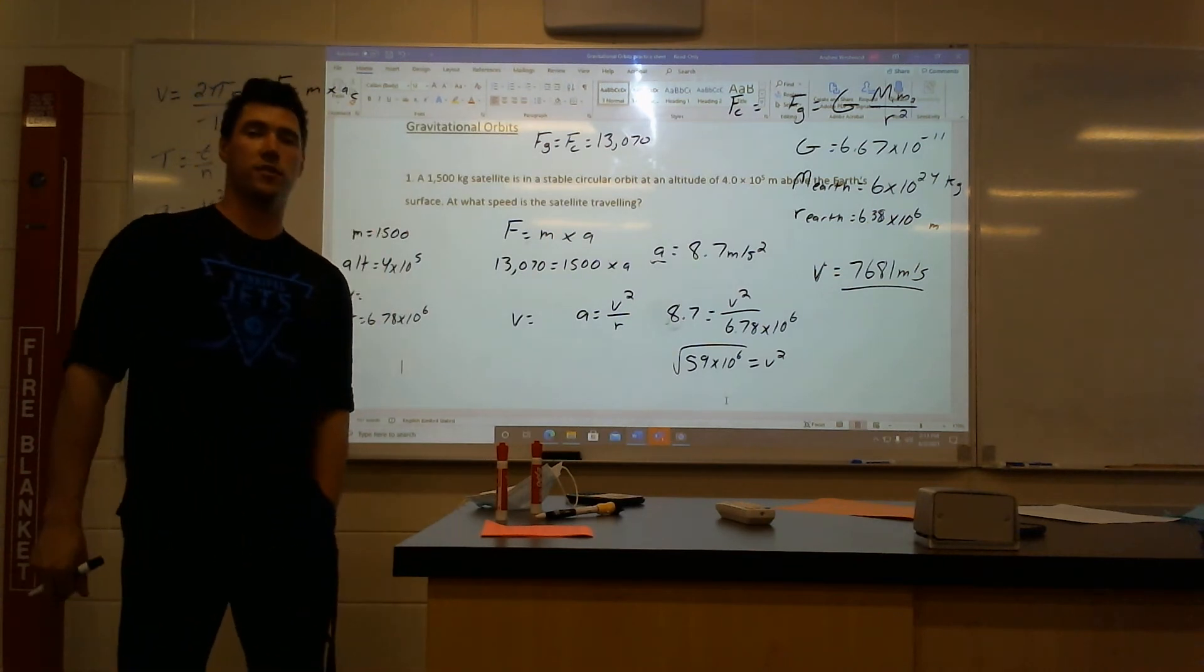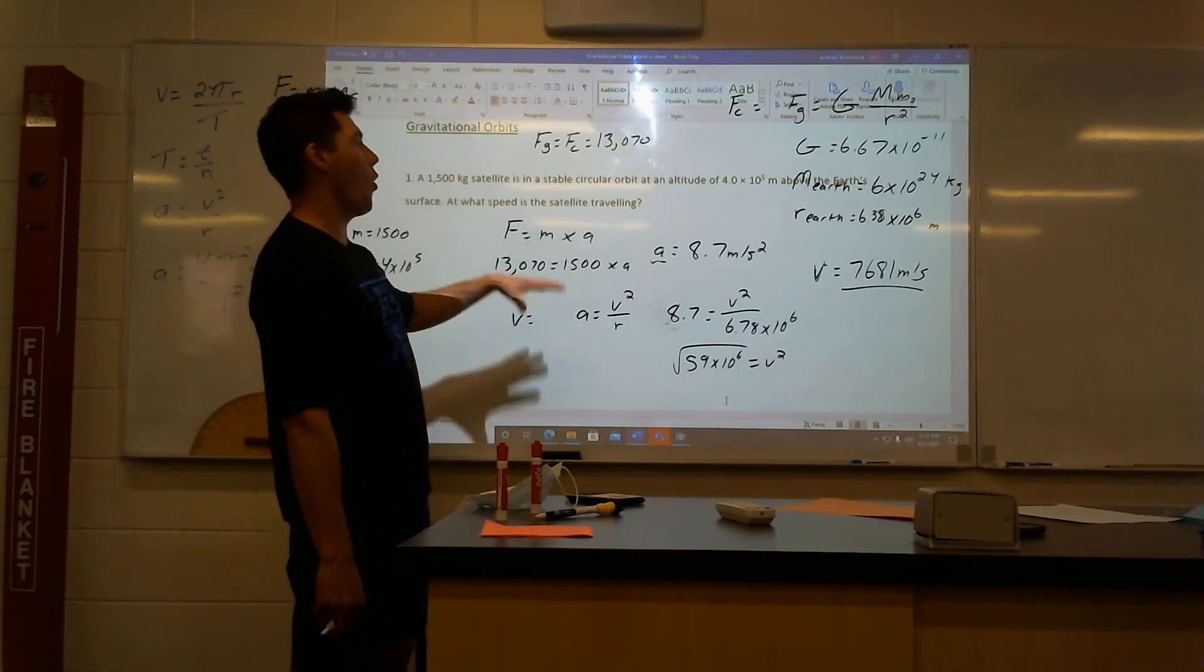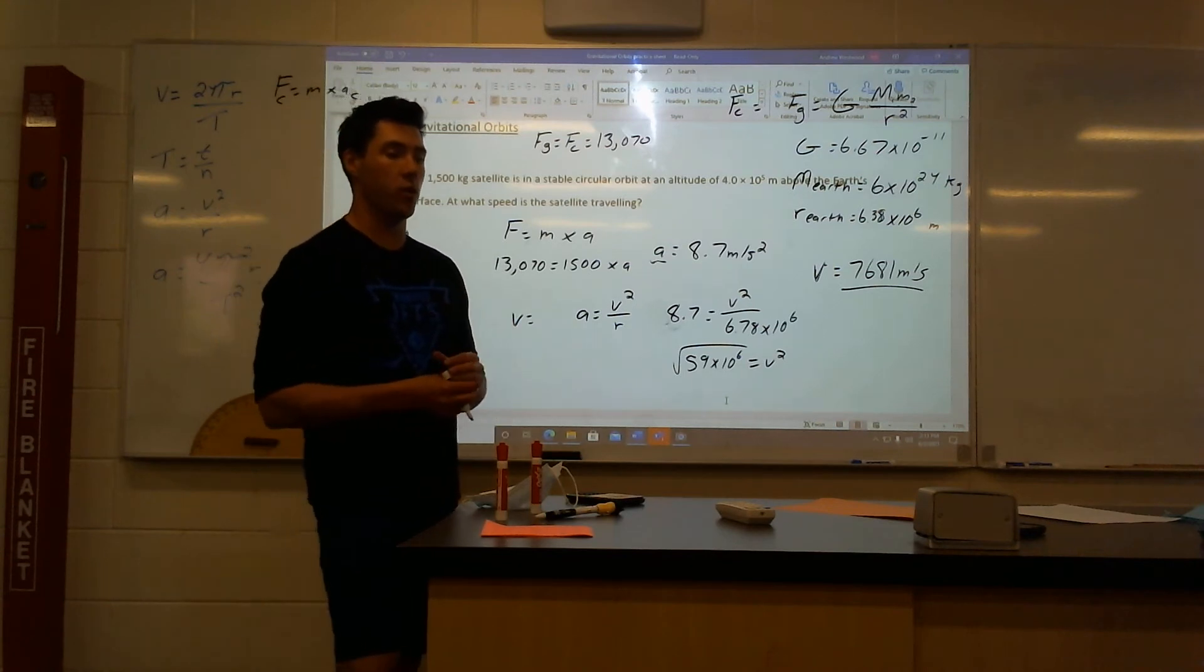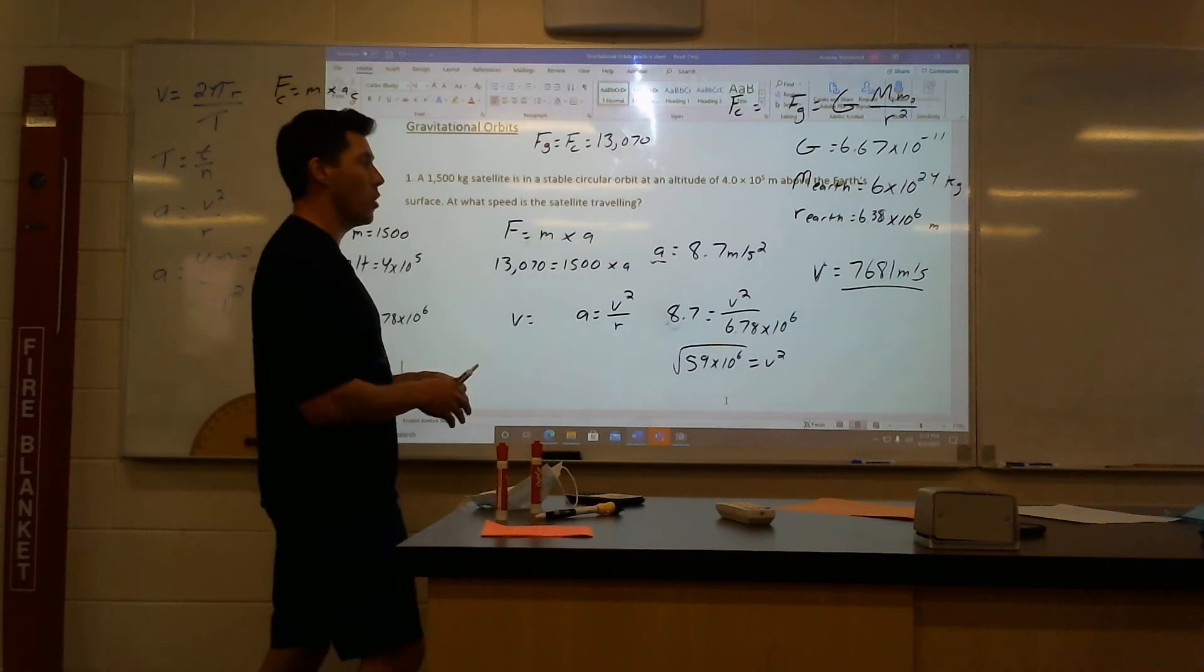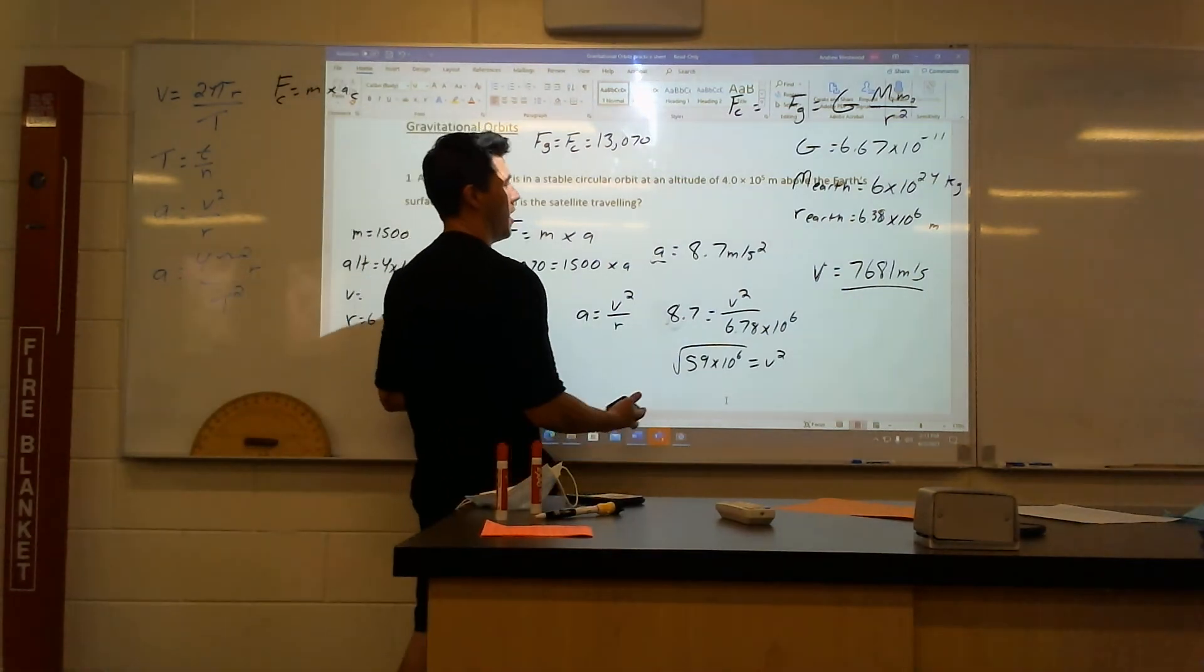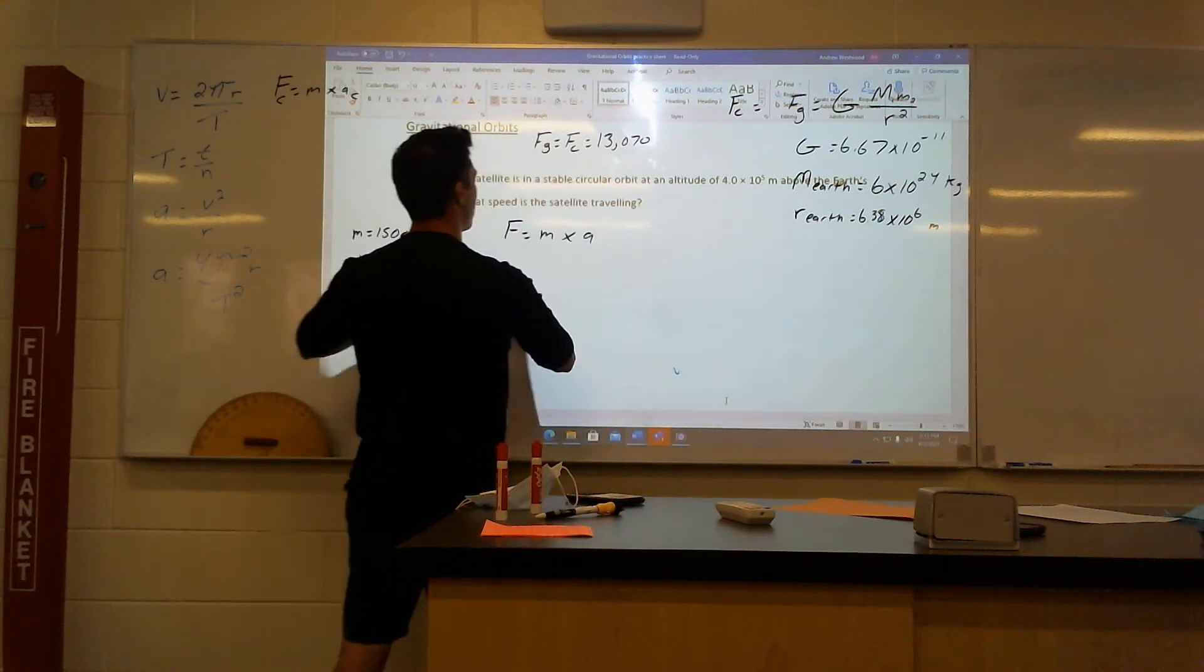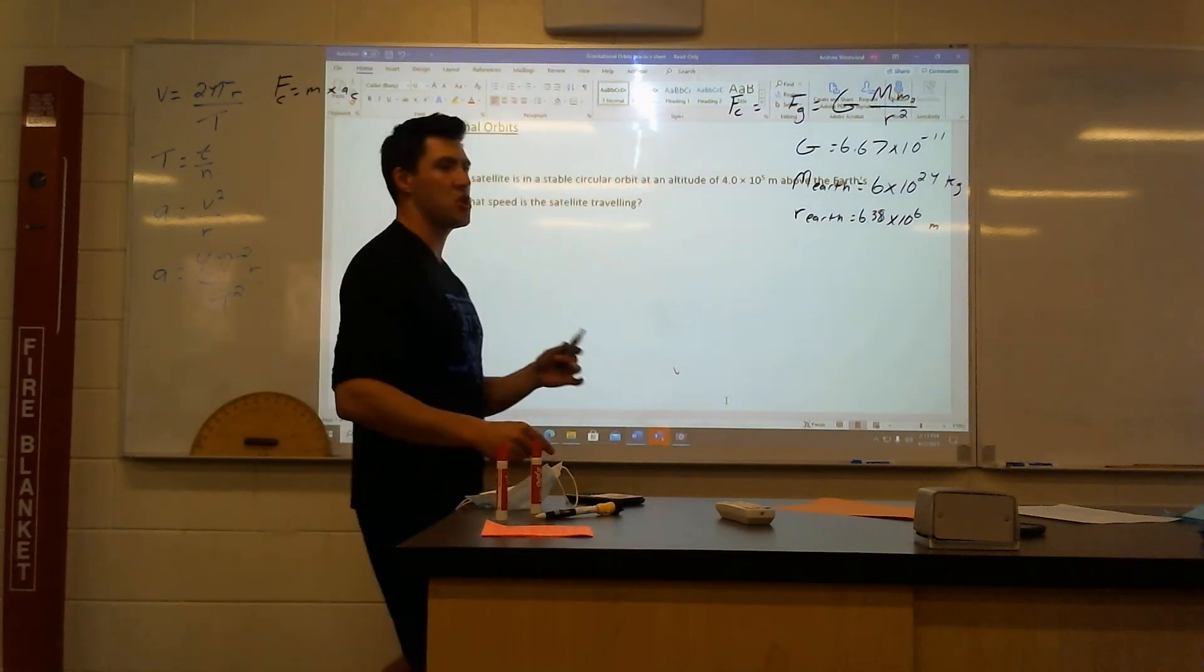7,681 meters per second. Like I said, looks like a nice, easy, kind of small question. Ends up being quite long. But, that's how we can tie in our force, gravity, and our force with our acceleration and our velocity. Let's do one more question, just part A, to kind of look at as well, using these circular motion formulas to figure out some work here. So, we're going to put our question 2, just part A.